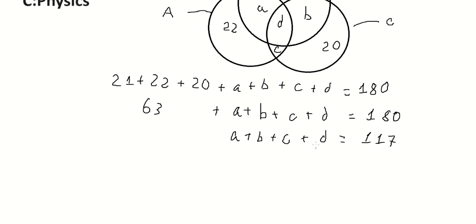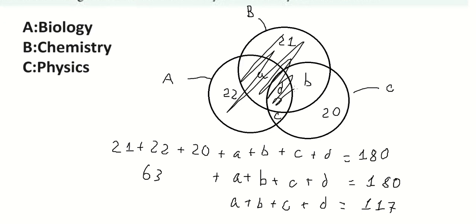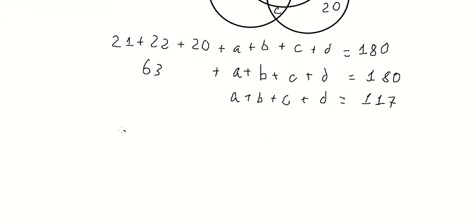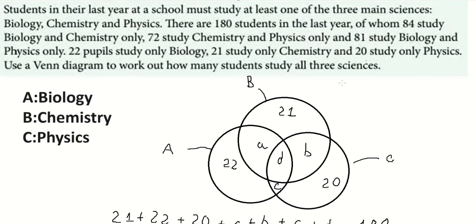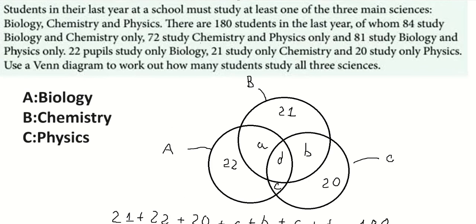Next, we know 84 students study biology and chemistry, so considering regions A and B, we have A plus D equals 84. Then, 72 students study chemistry and physics, which covers regions B and C, so D plus B equals 72.